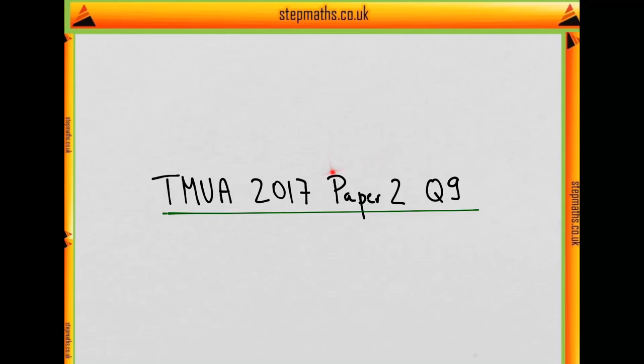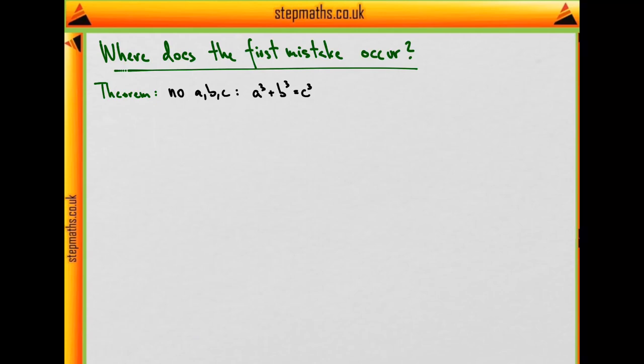In this video, we'll look at question 9 from the second paper of the 2017 exam. So in this question, we are given a theorem and an attempted proof, and we are supposed to evaluate whether that proof is correct, or where the first mistakes occur in which of the steps of the proof.